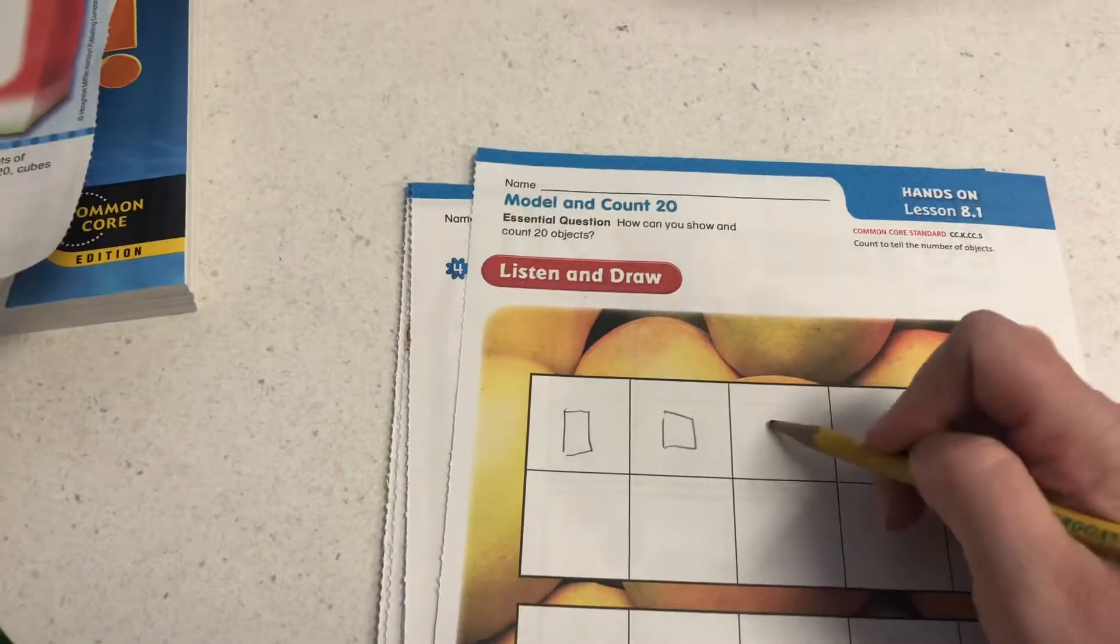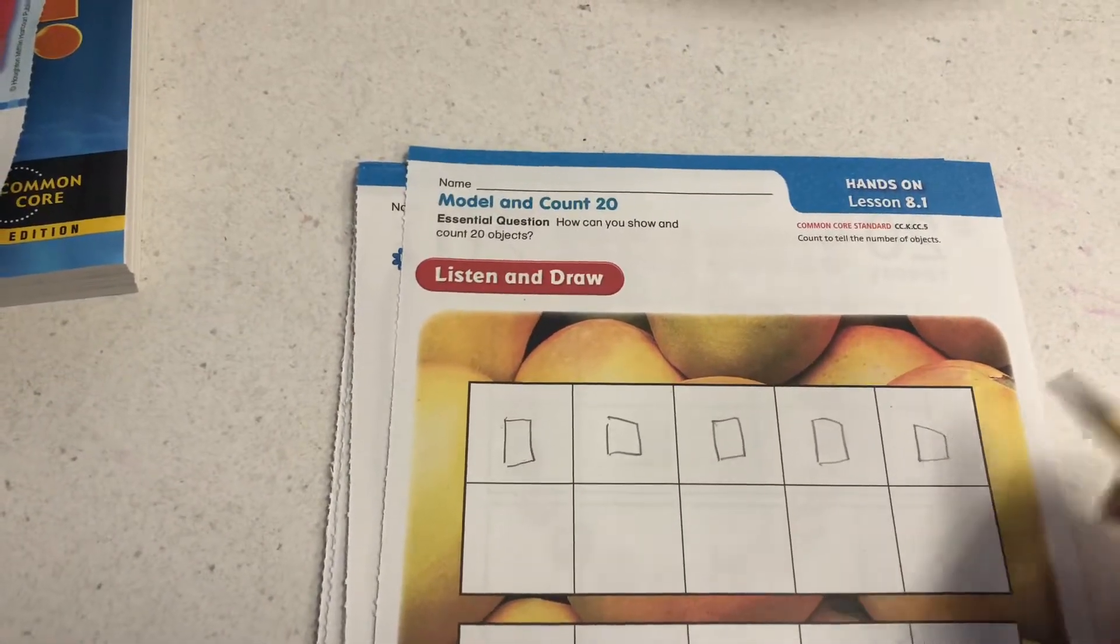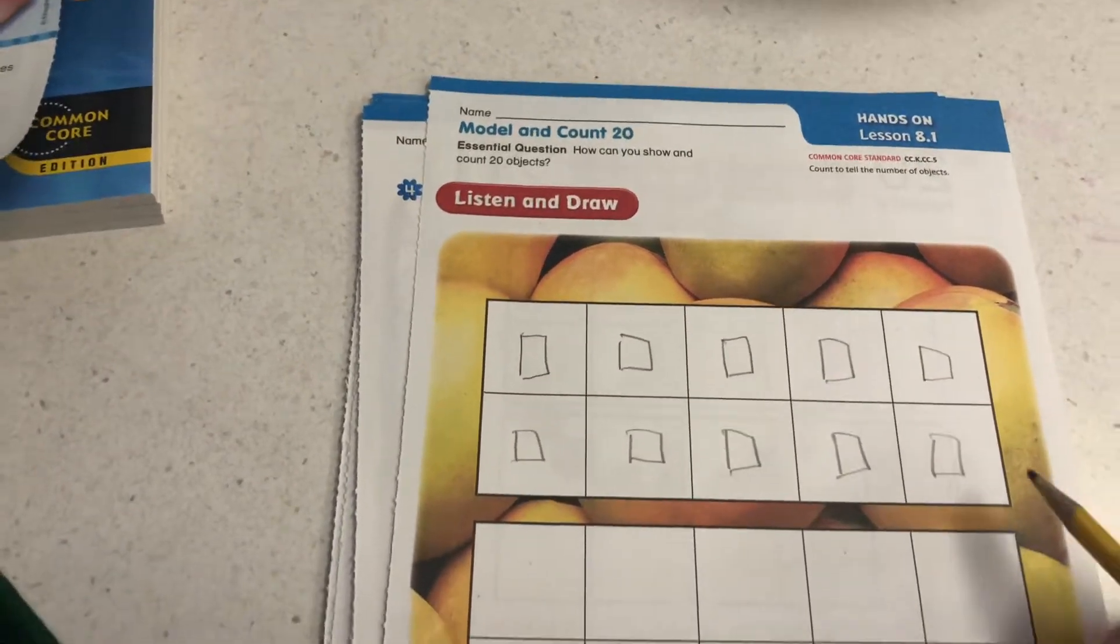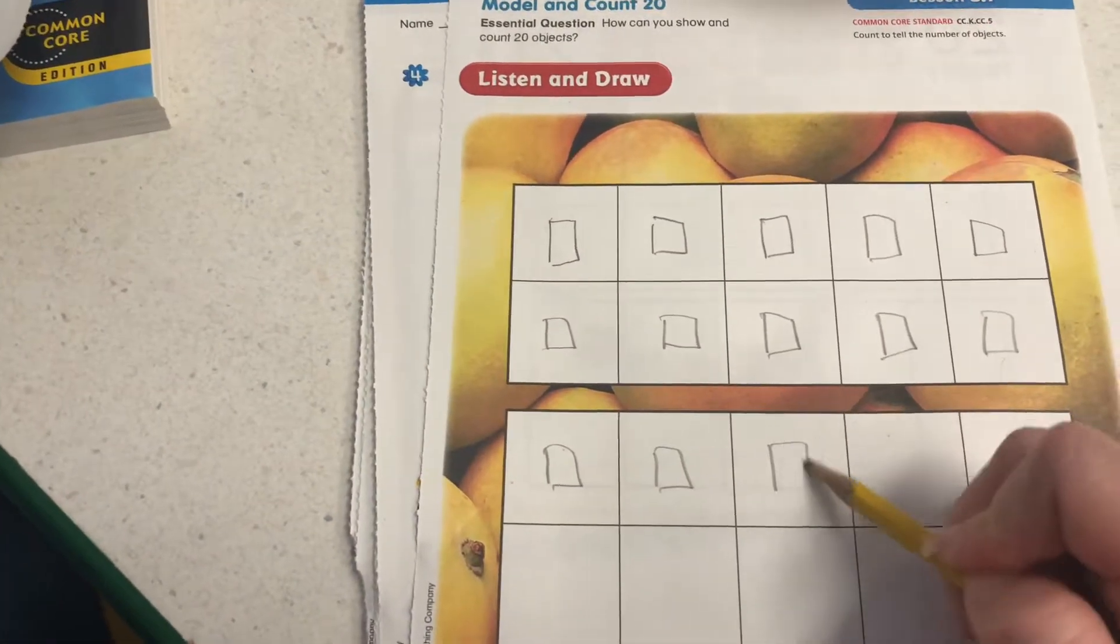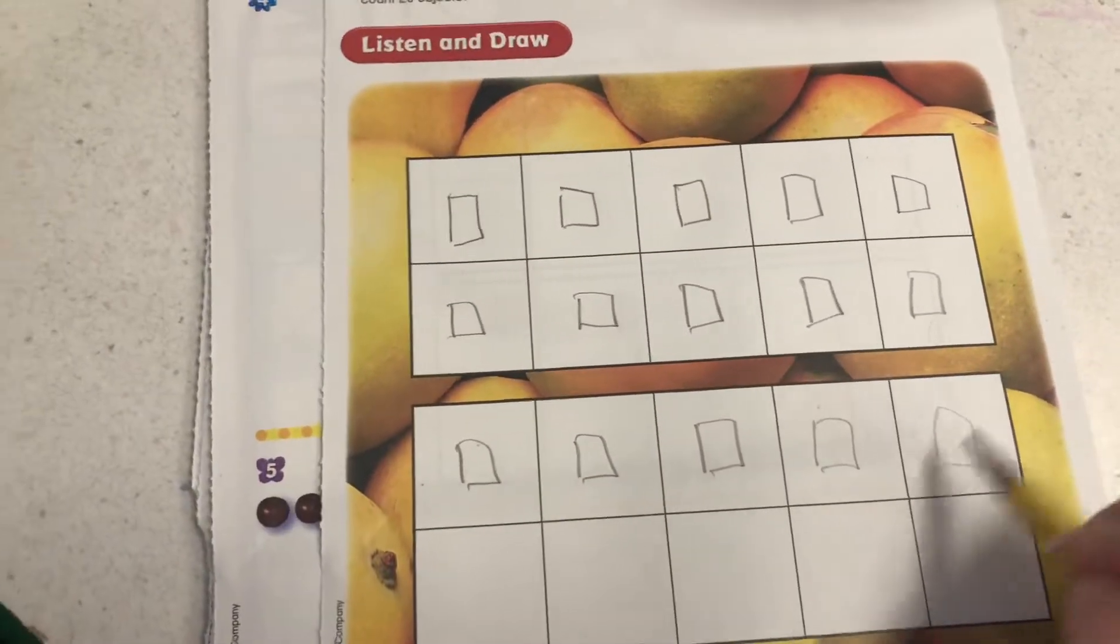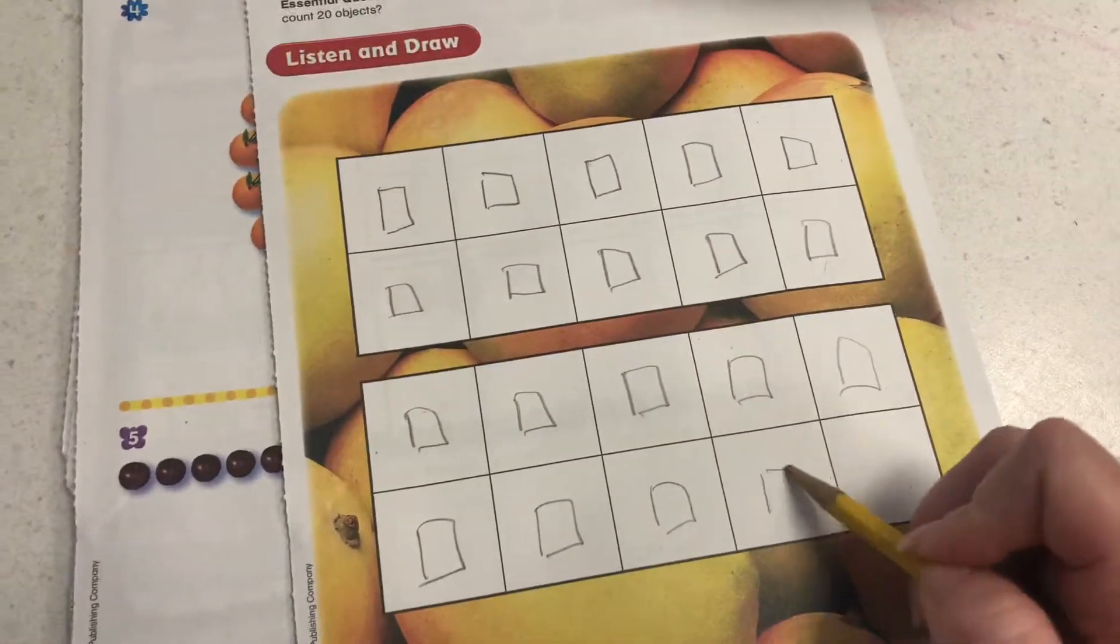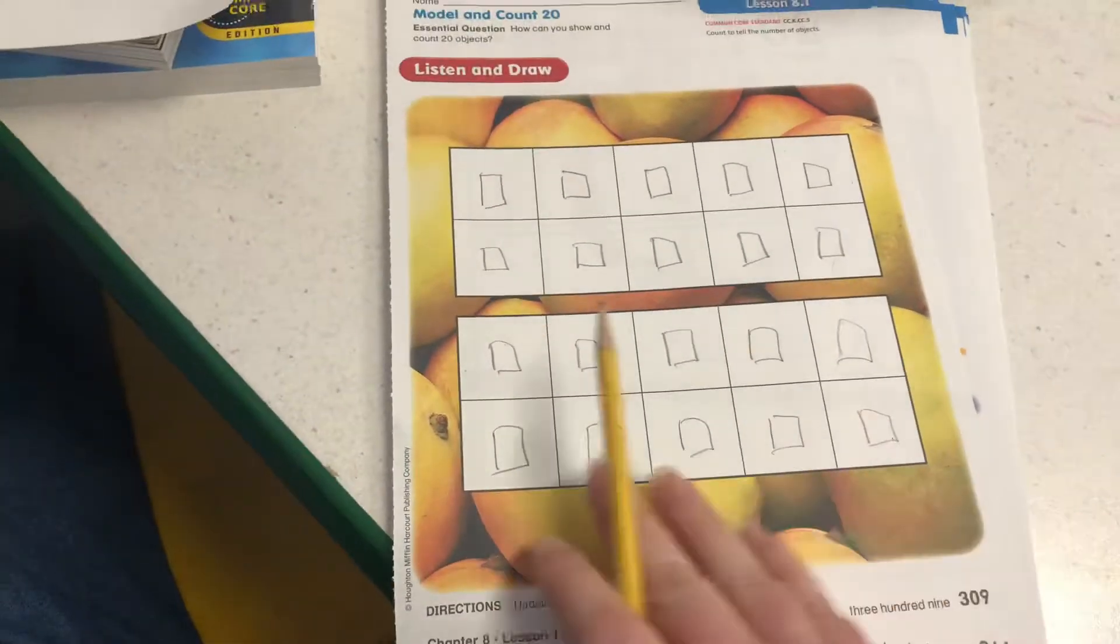One, two, three, four, five, six, seven, eight, nine, 10, 11, 12, 13, 14, 15, 16, 17, 18, 19, and 20. All right.